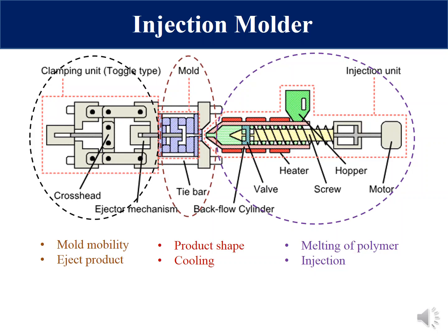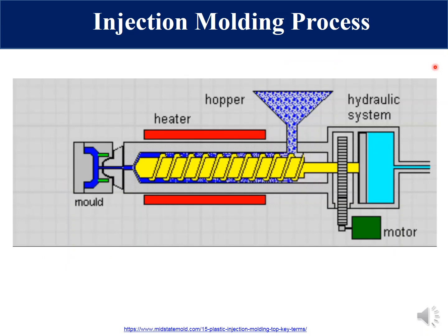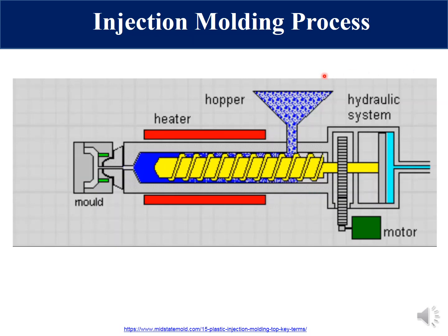The clamping unit is responsible for two main tasks. One is mold mobility, through which the mold opens and closes. The second function is to release the product from the mold. This is a very important function because without automatic product release, continuous operation of injection molding is not possible. Let's now discuss the injection molding process.